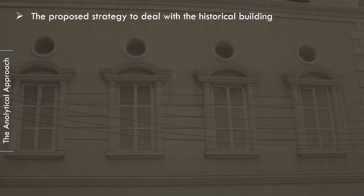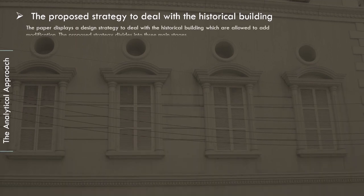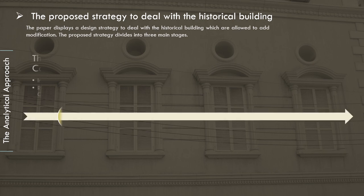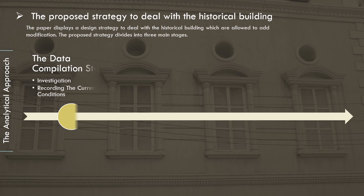The paper presents a design strategy to deal with historical buildings which are permitted to receive modification. The proposed strategy divides into three main stages: the data compilation stage, the planning stage, and the intervening stage.